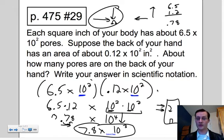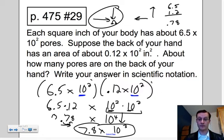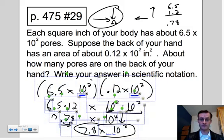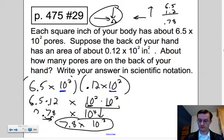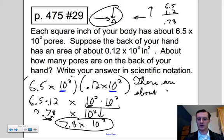Now anytime we ask in words, we need to answer in words. If you start with a real-life context, you need to go back and apply it to that context. Well, they ask how many pores are on the back of your hand. We're going to say there are about 7.8 times 10³ pores on the back of your hand.